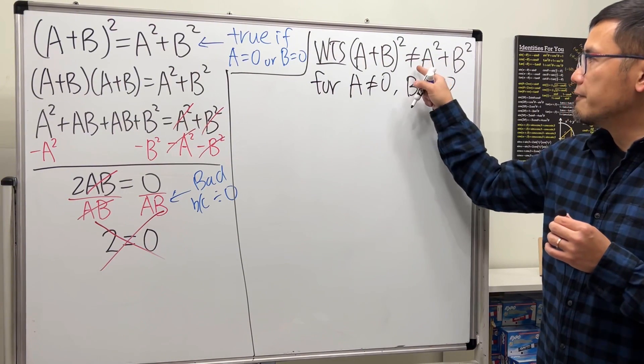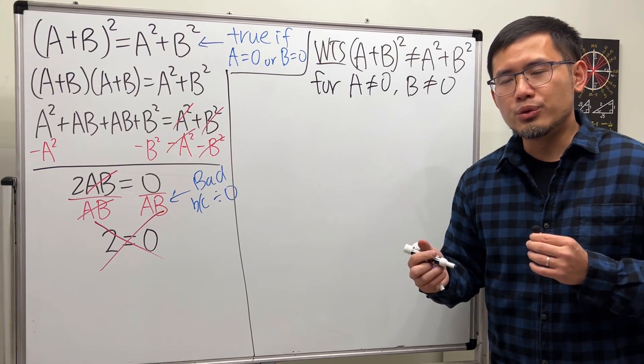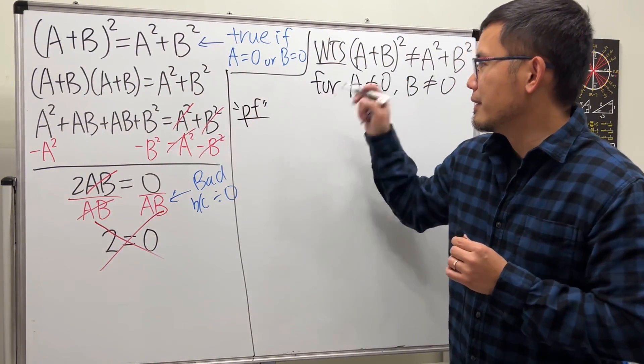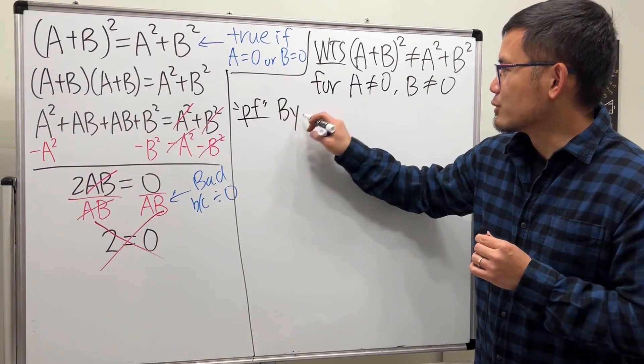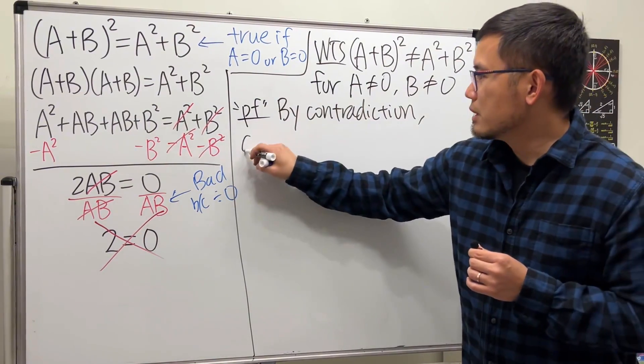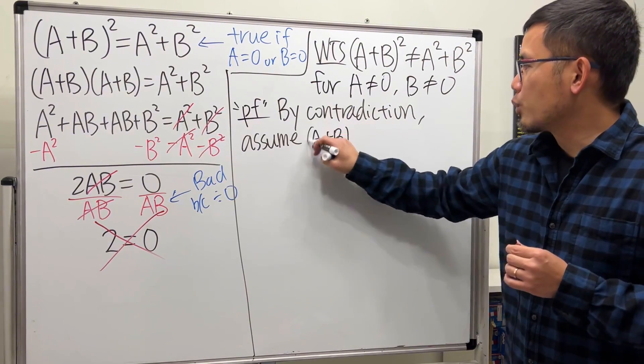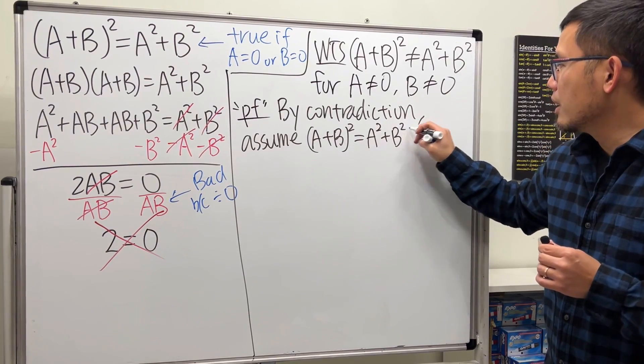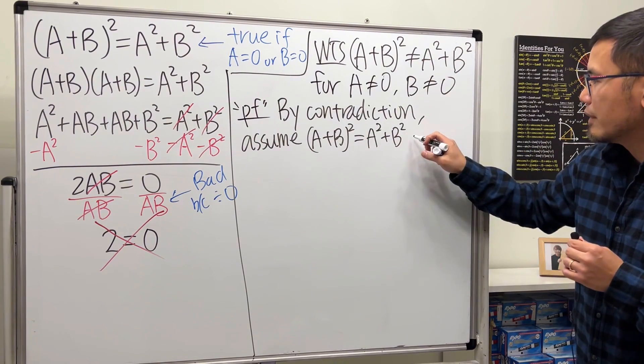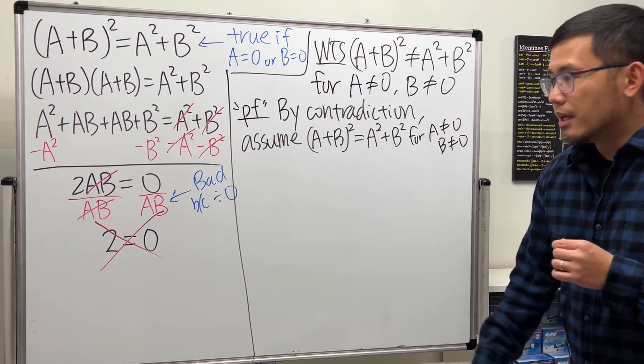So, how can we show this? This is a statement that has a not, right? Usually, you can try to do it with contradiction when you are trying to do a not statement. So, here is the proof, right? So, I'll just say by contradiction. Assume this is true: a plus b squared is equal to a squared plus b squared. And here, we also have to take this for this assumption. This is just a negation of that. And you also have to say for a not equal to 0, b not equal to 0. All right.